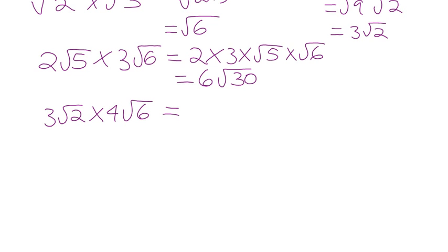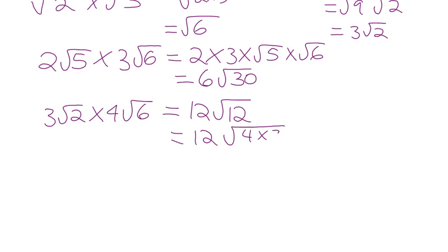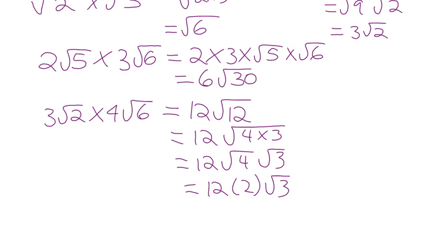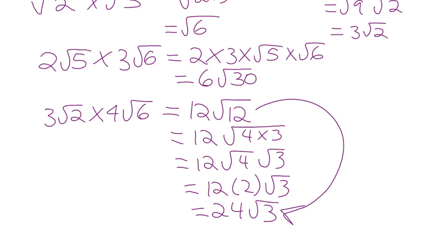What about 3 root 2 times 4 root 6? First, 3 times 4 is 12. Then root 2 times root 6 is root 12. But root 12 simplifies — 12 is 4 times 3, so root 12 is 2 root 3. Working it in full detail: root 12 is root of 4 times 3, which is root 4 root 3, which is 2 root 3. So it's 12 times 2 root 3, which gives 24 root 3.